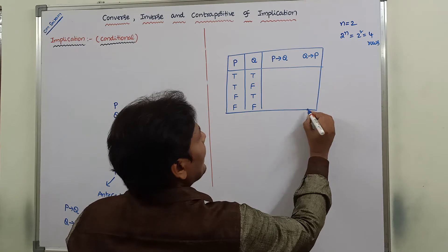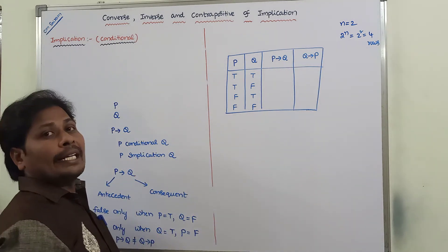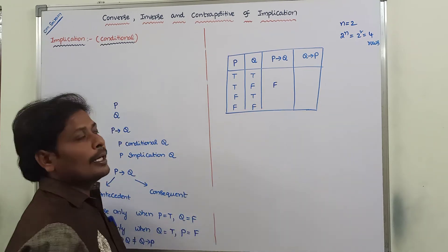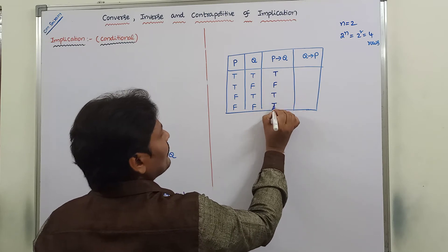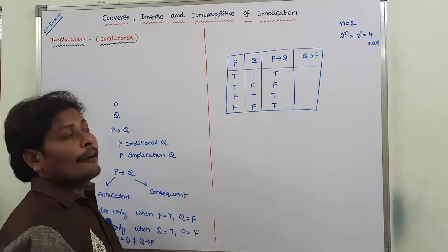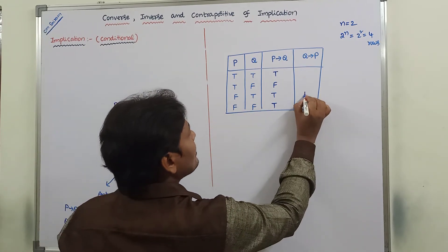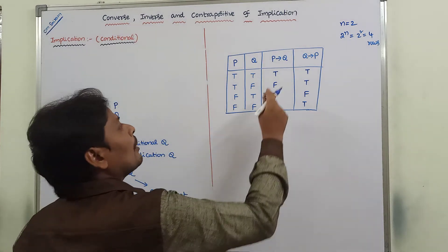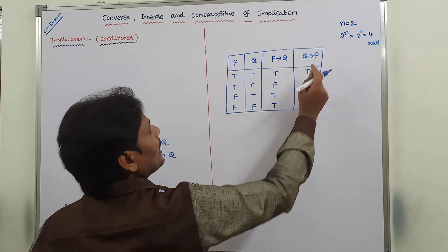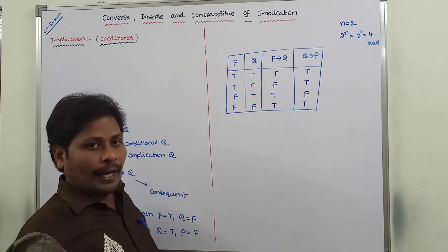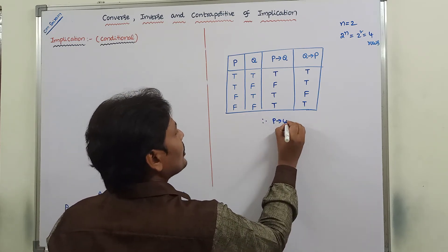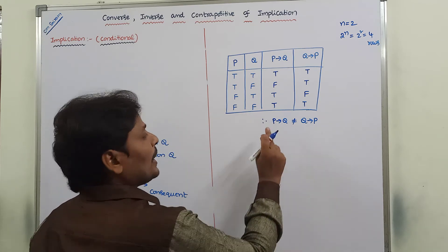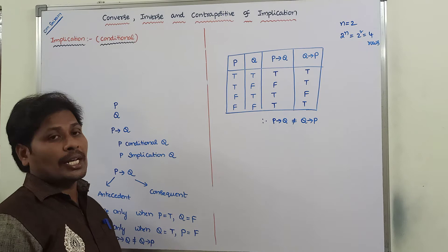P conditional Q is false only when P is true and Q is false; in all remaining cases it is true. By observing the two columns for P conditional Q and Q conditional P, both columns are not equal. Hence we can say that P conditional Q is not equal to Q conditional P, and P implication Q is not equal to Q implication P.